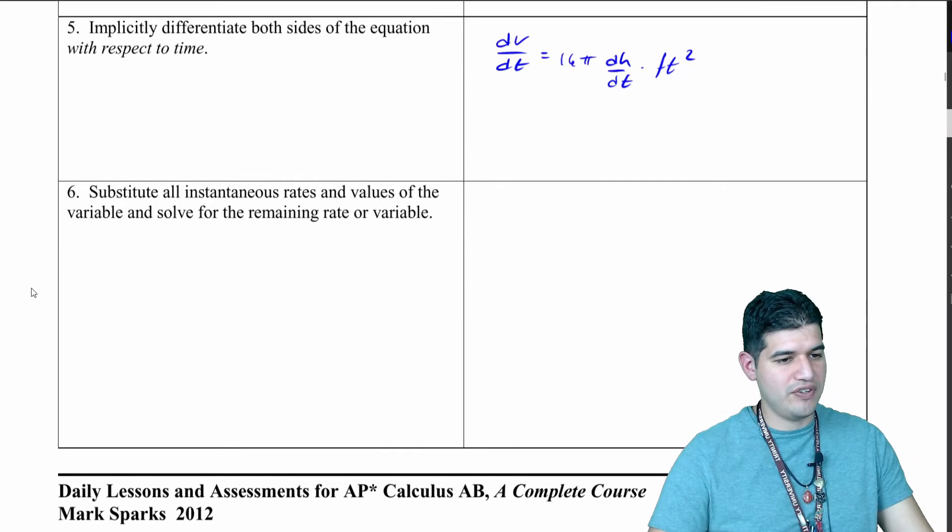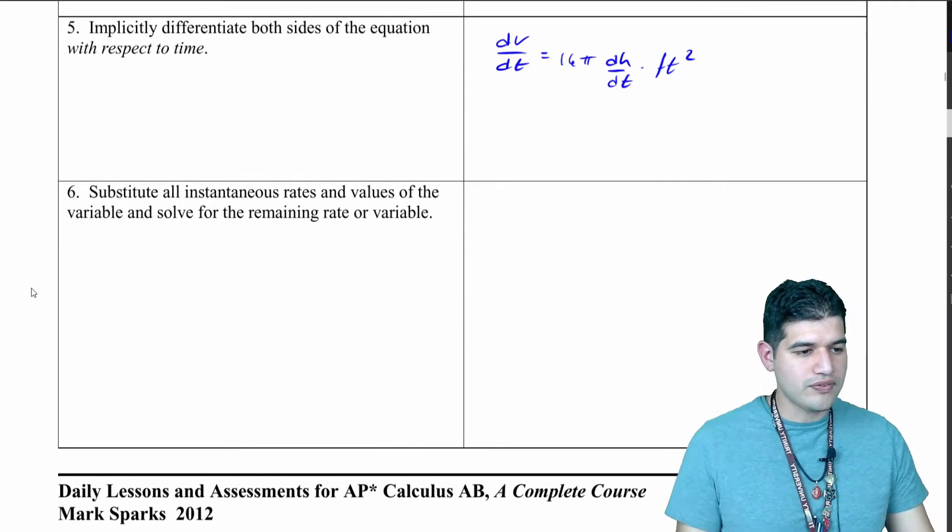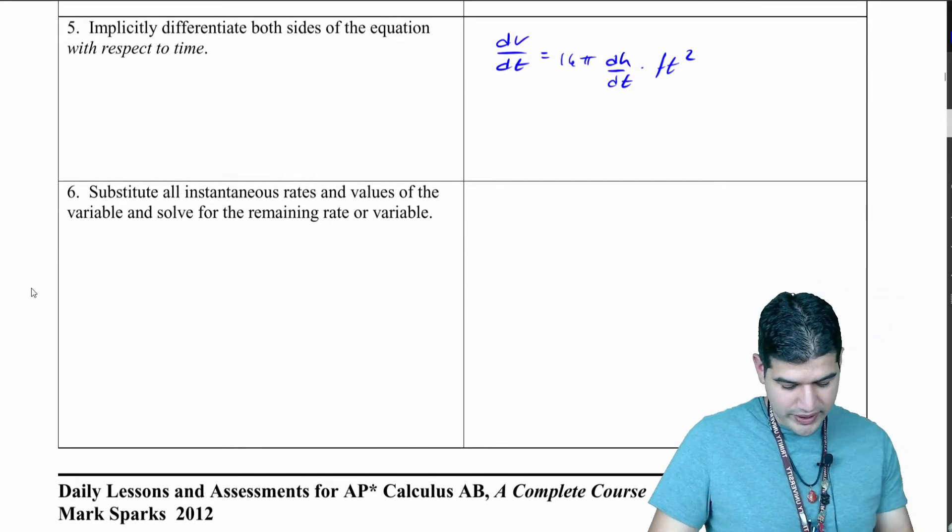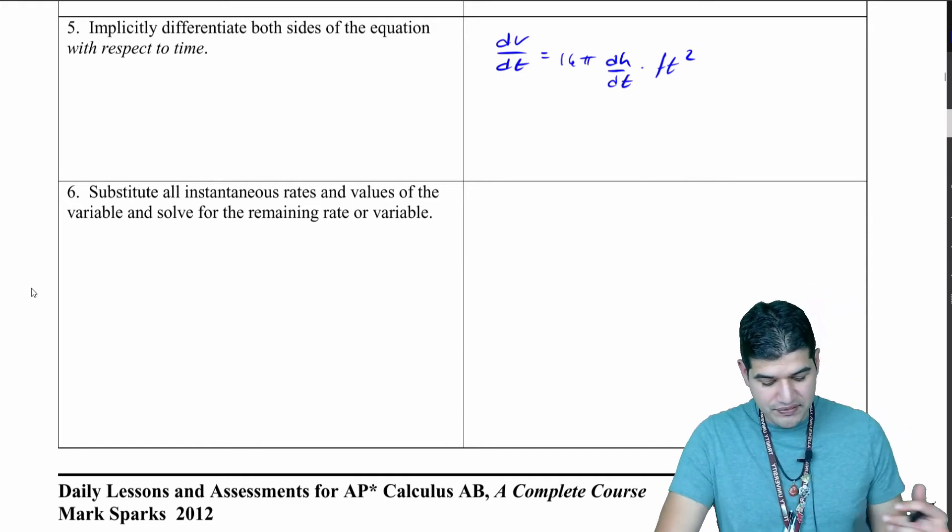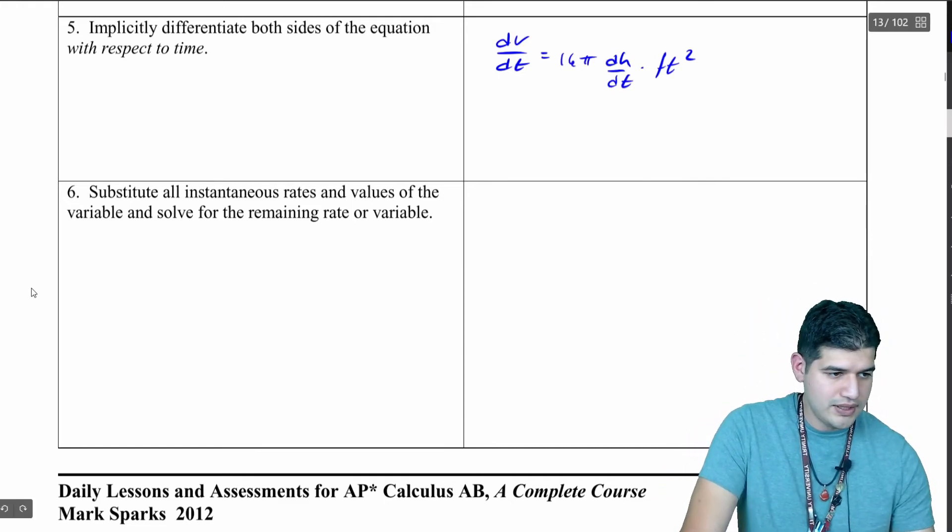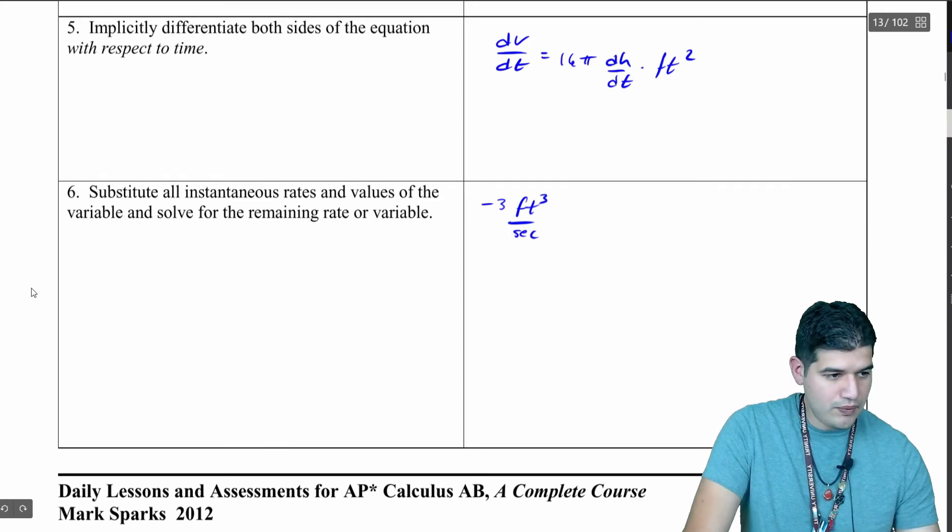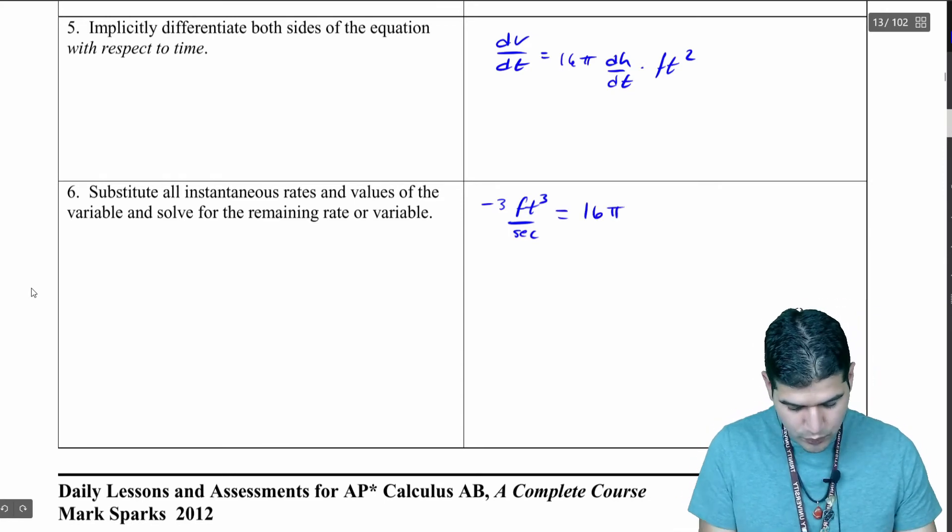Now substitute all of our rates that we're given so we can find what we need to find. We know we were given dV/dt - that was negative three cubic feet per second. That's going to be equal to 16π dh/dt, which is what we need to find.